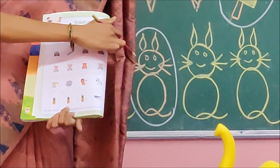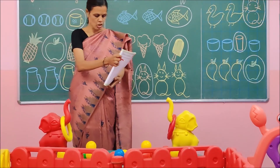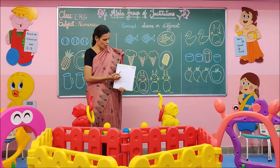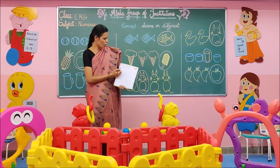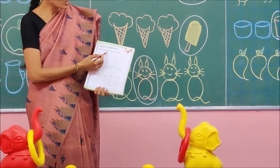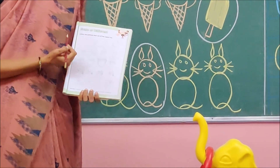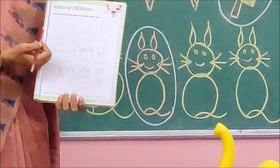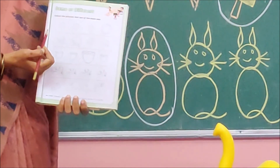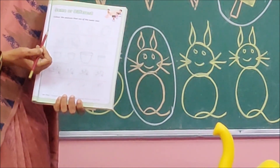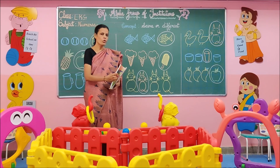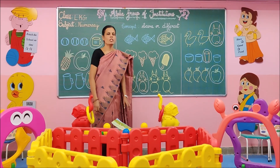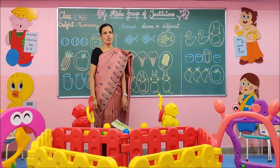Good children. Turn to the next page, page number 17. You have to colour the pictures that are of the same size. I hope you all understand the concept. See you in the next class. Thank you.